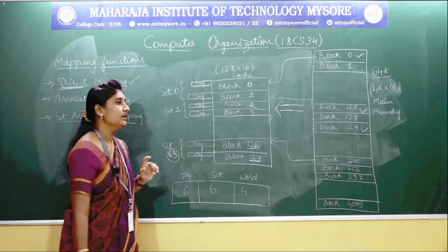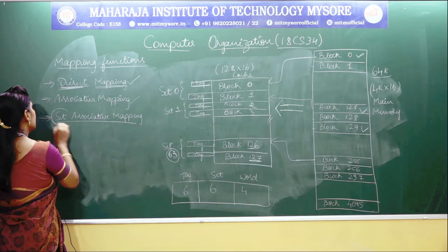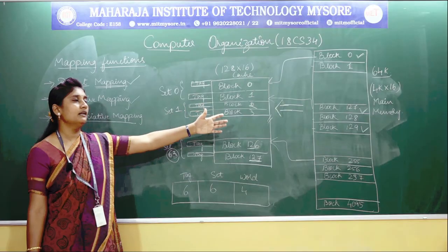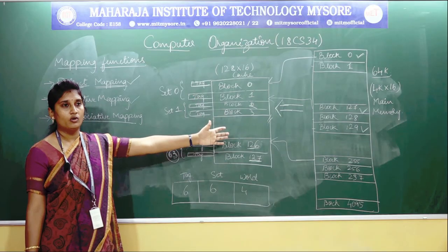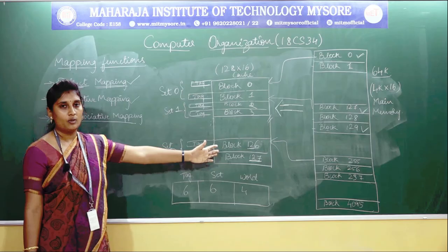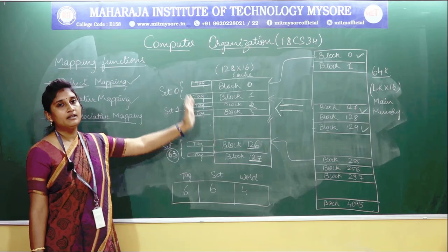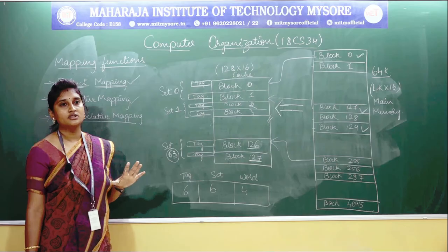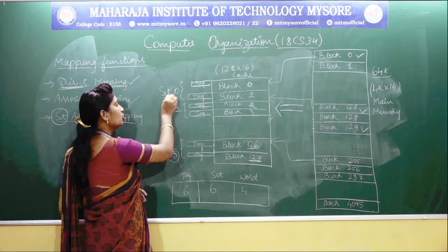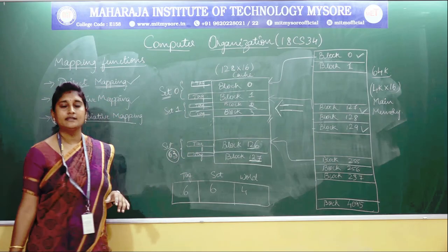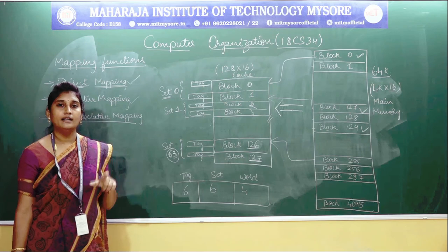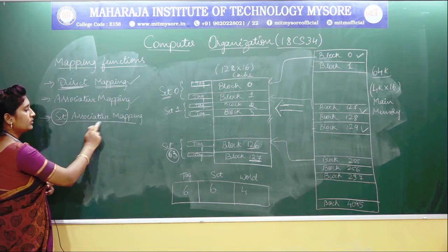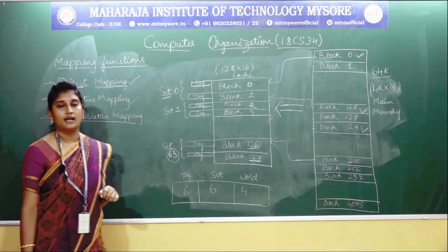That is why the name is called set associative. Whatever mapping was done from main memory is moved to the cache memory, but in the cache memory you have reduced the number of searches by making groups of tags called sets. That is why it is called set associative mapping technique.